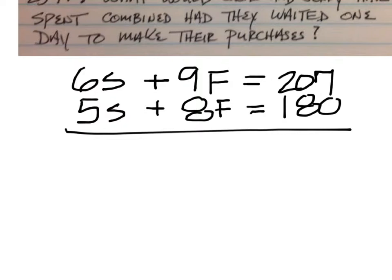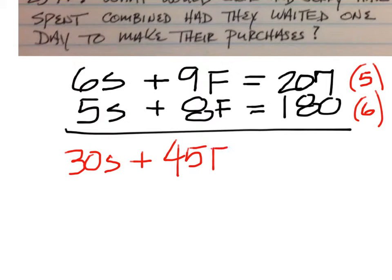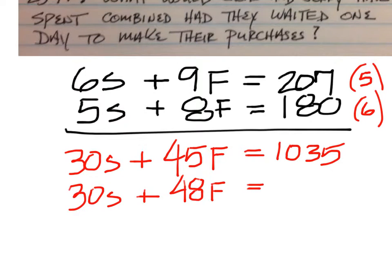Many different ways you can do this one to solve: elimination, substitution. I'm going to make a 30 out here for the S's, which means you multiply by five there and by six here. On the top that would be 30S plus 45F equals 1035. On the bottom you'll have 30S plus 48F equals 1080.